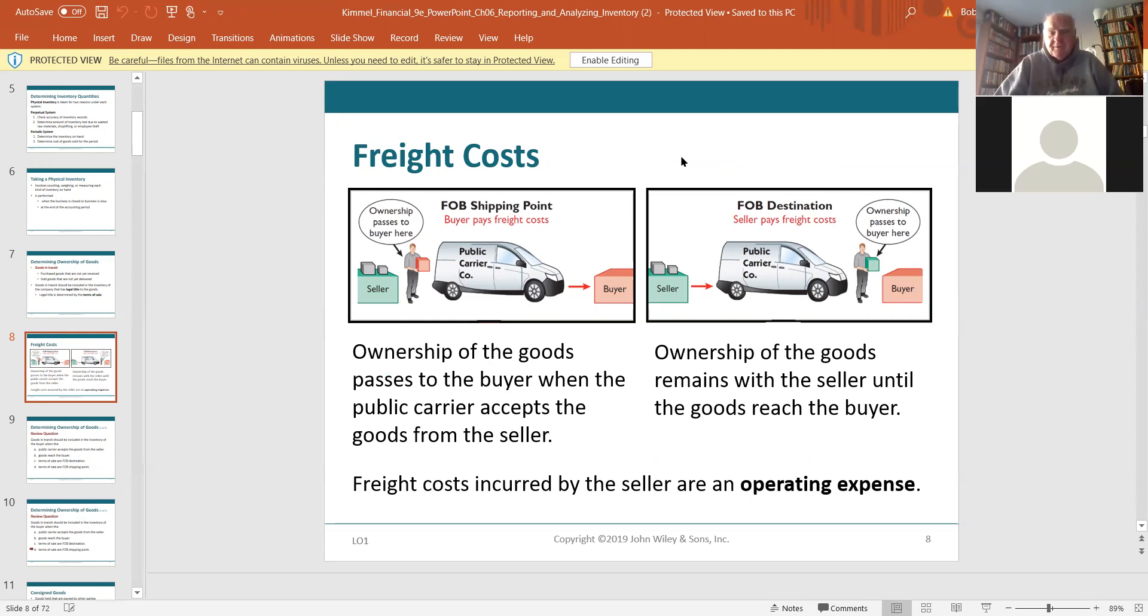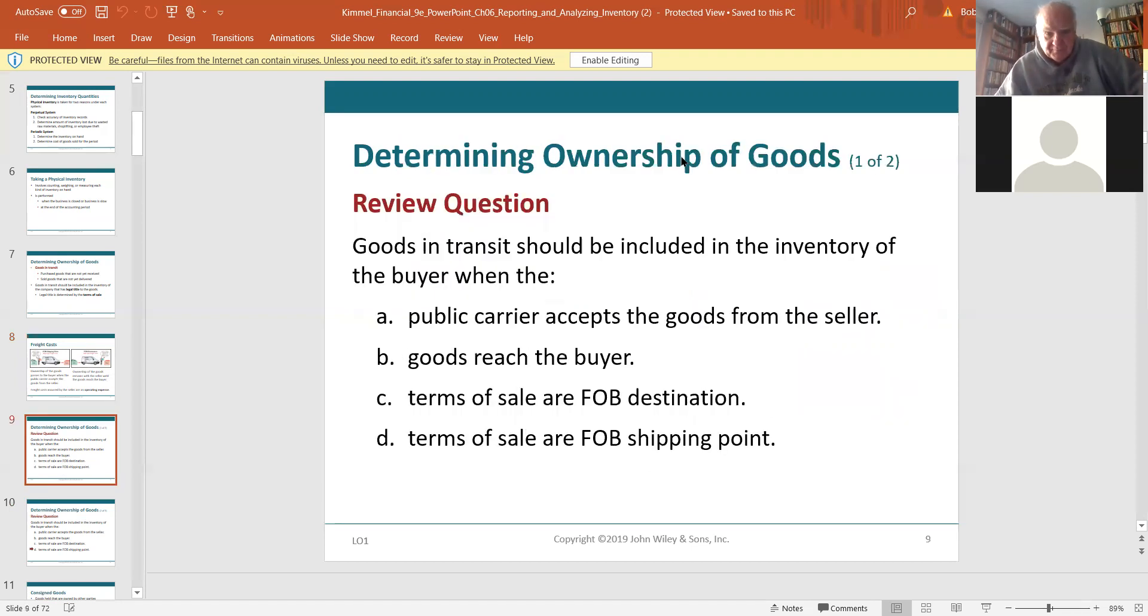FOB shipping point means that as soon as the goods ship, the buyer owns them. So you ship me a truckload of parts. As soon as that truck left your factory, I owned it. I'm responsible for paying the freight. My insurance will take care of any accidents or anything. If it's FOB destination, then you, the seller, own it until it gets to me. And companies can argue about these terms because one can be an advantage to another, and they're always talking about them.